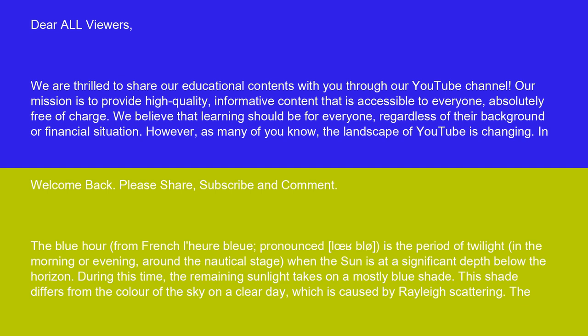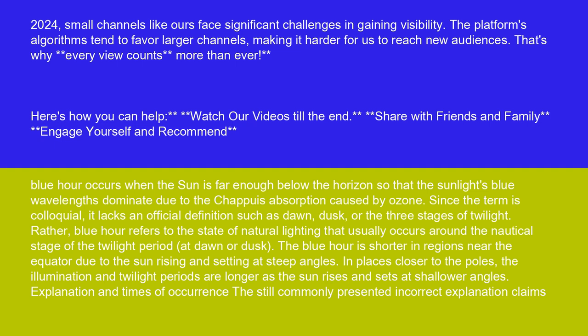During this time, the remaining sunlight takes on a mostly blue shade. This shade differs from the color of the sky on a clear day, which is caused by Rayleigh scattering. Blue hour occurs when the sun is far enough below the horizon so that the sunlight's blue wavelengths dominate due to the sharp absorption caused by ozone.